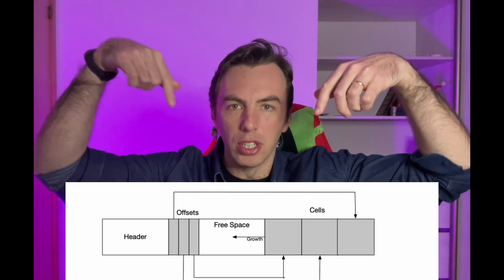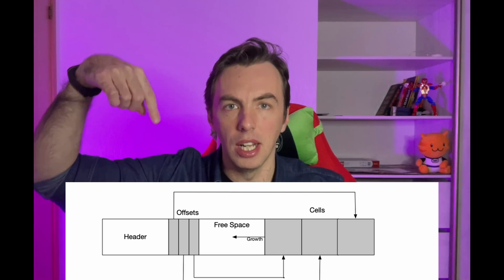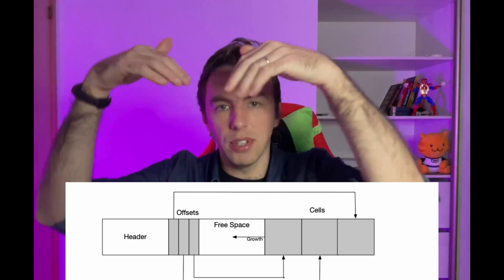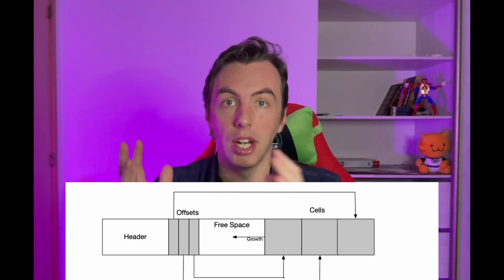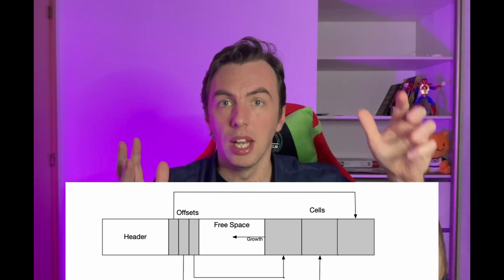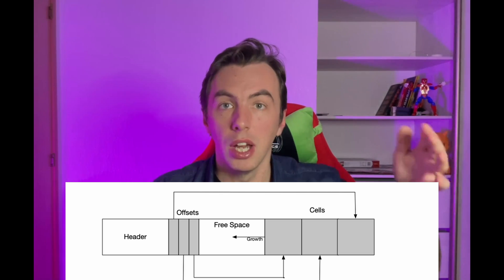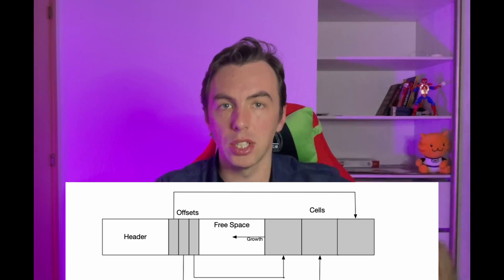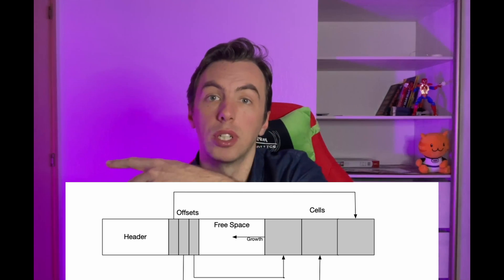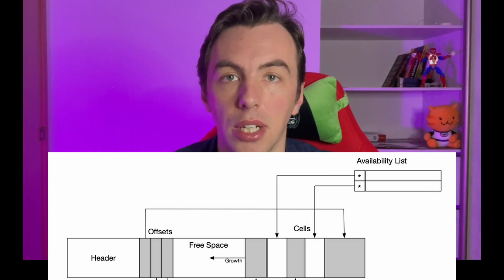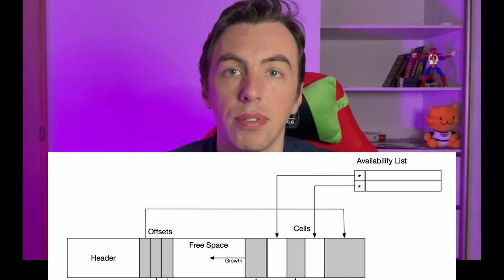The last question in this chapter is how cells are organized inside the page. Looking at the picture, we have a header at the start and the actual cells at the end. Right after the header, we have the offset — an array of pointers that point to the cells being written to the end of the page. Every new cell goes to the empty space, so cells grow from the end of the page upwards toward its beginning. However, we're not only adding data — we can remove it as well, which creates the problem of managing empty space.